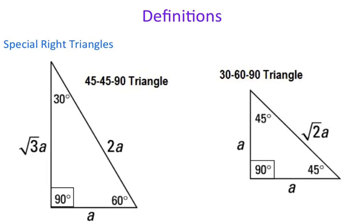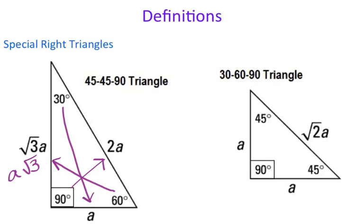The next thing we're looking at are special right triangles — 30-60-90 triangles and 45-45-90 triangles. The special right triangles were used to create the unit circle, which is why the unit circle has angle measurements of 30, 60, and multiples of 45. For a 30-60-90: opposite your 90 degrees is 2a, opposite your 60 degrees is a root 3, and opposite your 30 degrees is a. For a 45-45-90: opposite each 45 is a, and opposite your 90 degrees is a root 2.